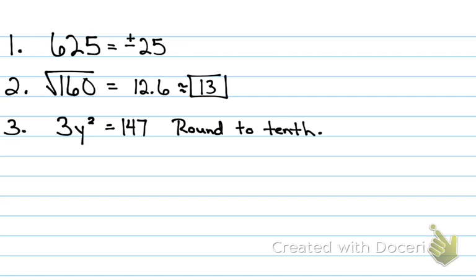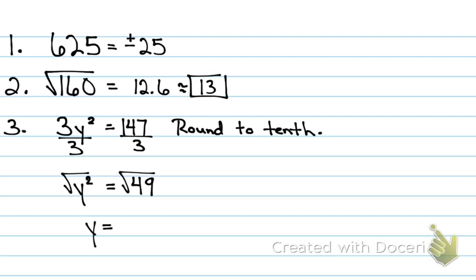On the quiz, I saw a lot of people taking the square root first — but you have to divide by 3 first. You take the square root last. You have to get rid of everything else connected to the variable, then take the square root. In this case, it works out very nicely. Your answer is positive and negative 7. Don't forget the positive and negative — you will lose 2 points on each answer if you forget the sign.